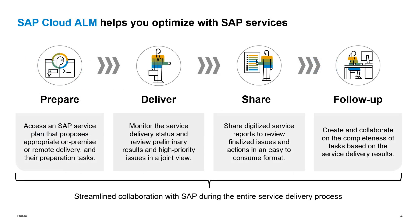During our typical SAP services, we have these four phases: prepare, deliver, share, and follow-up. And the main goal of SAP Cloud ALM for Service is to help you optimize the entire service delivery process.